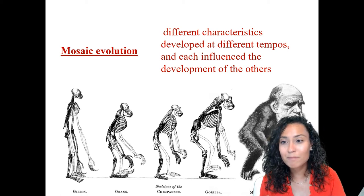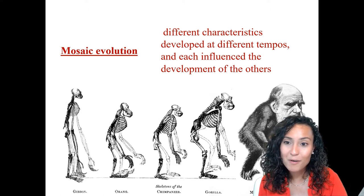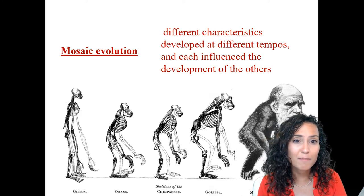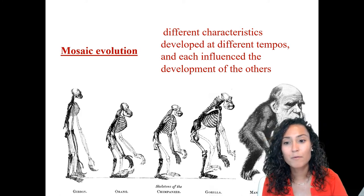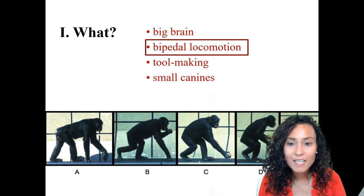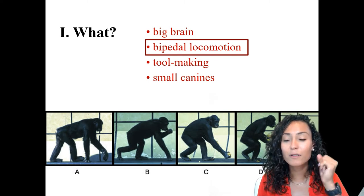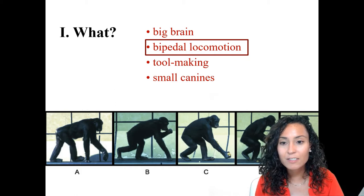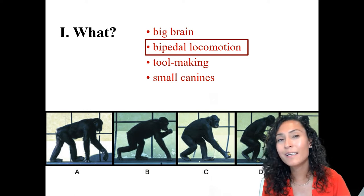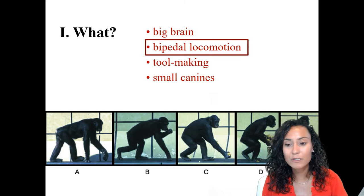Mosaic evolution means that you can't have the development of the big brain without walking on two feet, without tool making, and without similar developments in cranial anatomy with smaller canines. So today we're going to focus particularly on this idea of bipedal locomotion and talk about when and why we developed this ability to walk on two feet.